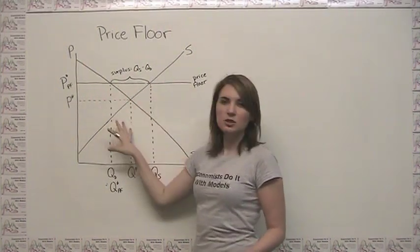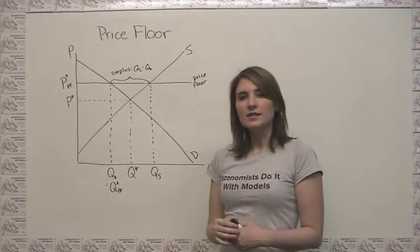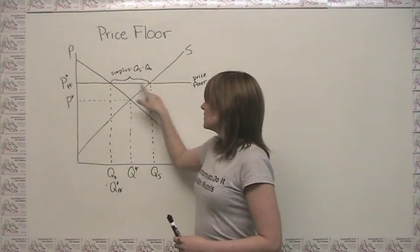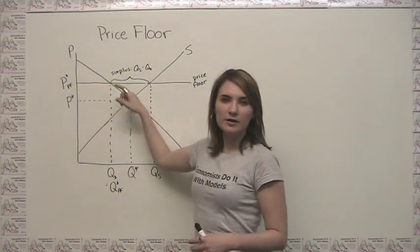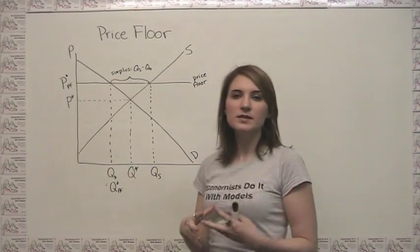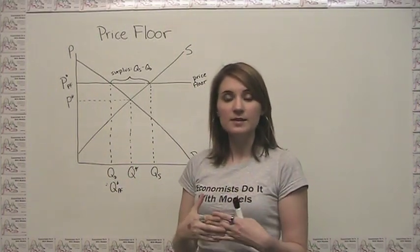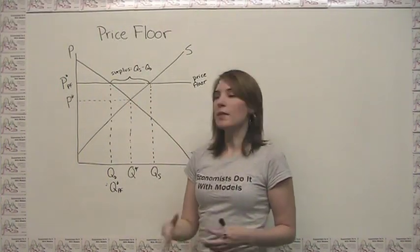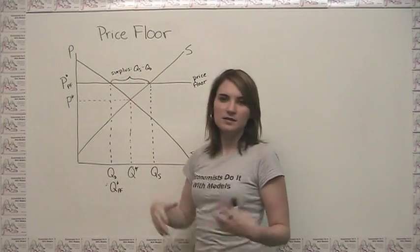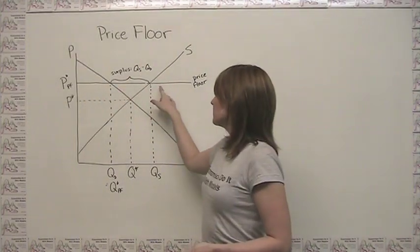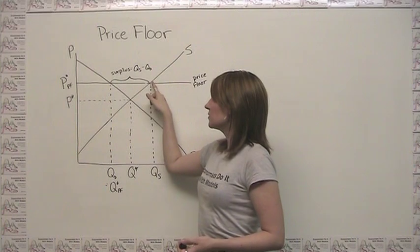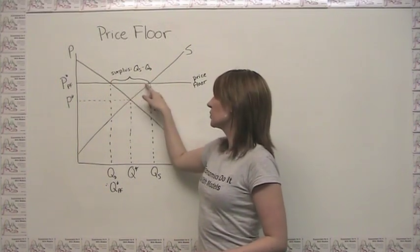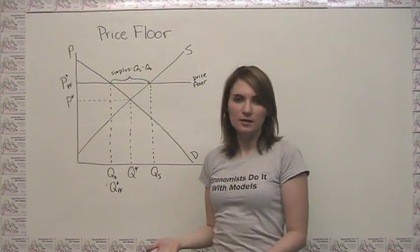The complication not shown in this model is that it's unclear how companies figure out how to limit their supply. We don't really know whether it's all existing companies producing less individually, or if some companies are dropping out of the market. That's left ambiguous in this particular model. But the important part to remember is that you're not really getting any stockpile — you're just forcing producers to not produce as much as would be profit-maximizing at this price.